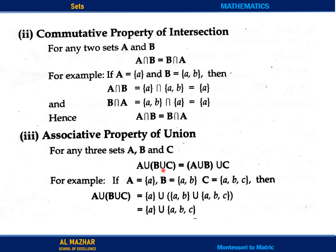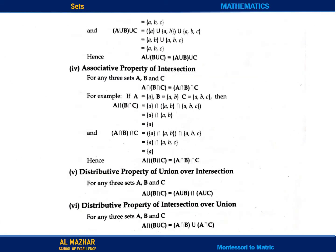A union (B union C) is equal to (A union B) union C. Now let's take an example: A equals {a}, B equals {a, b}, and C equals {a, b, c}. So A union B: taking union of {a} and {a, b} gives {a, b} — common elements taken once. Then A union B union C: union of {a, b} and {a, b, c} gives {a, b, c}.